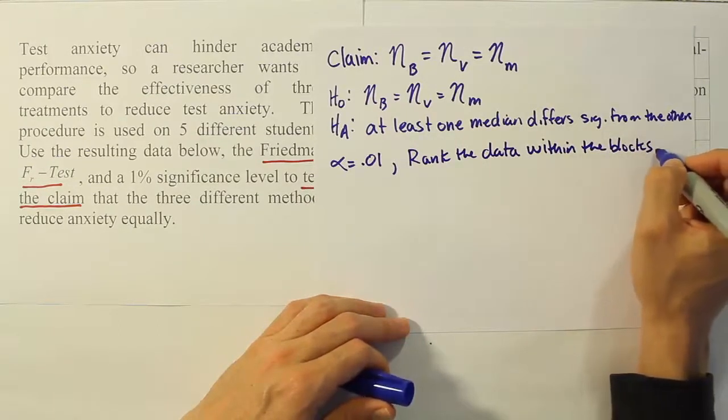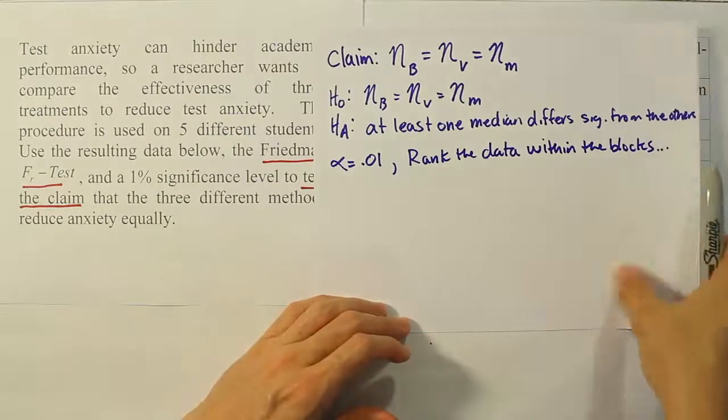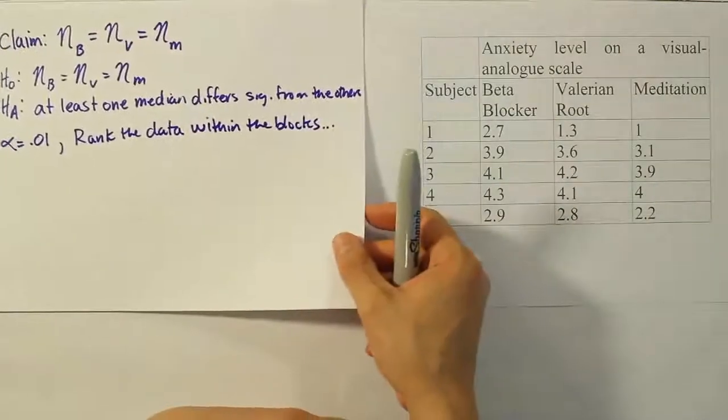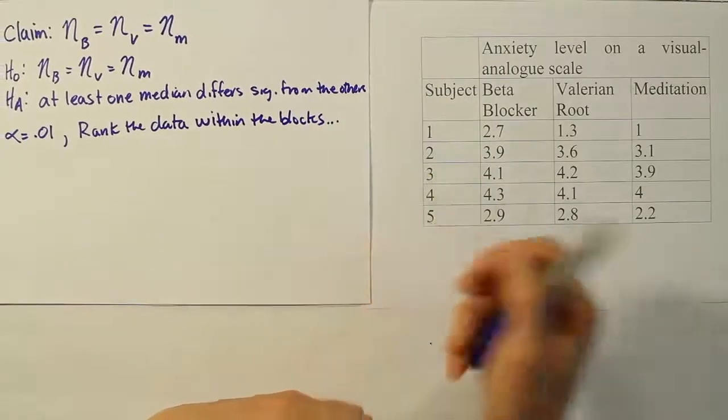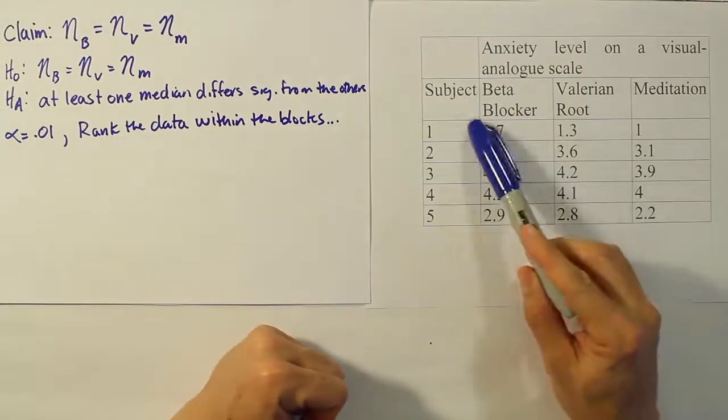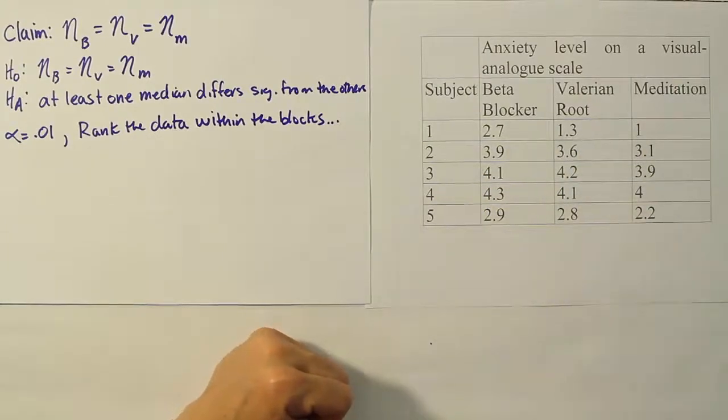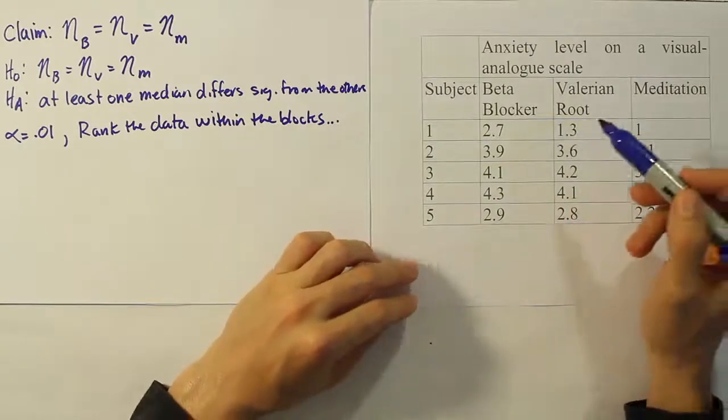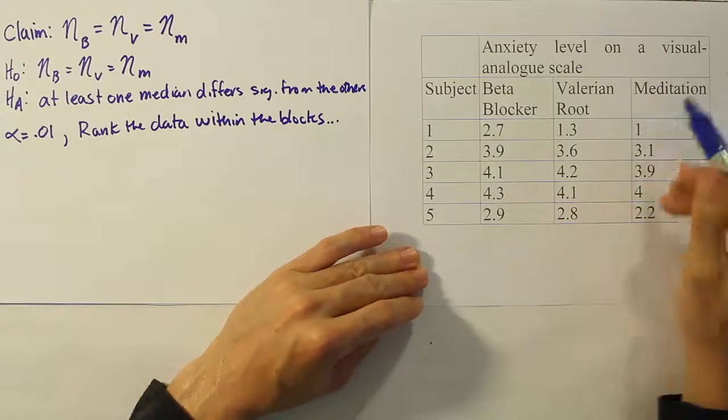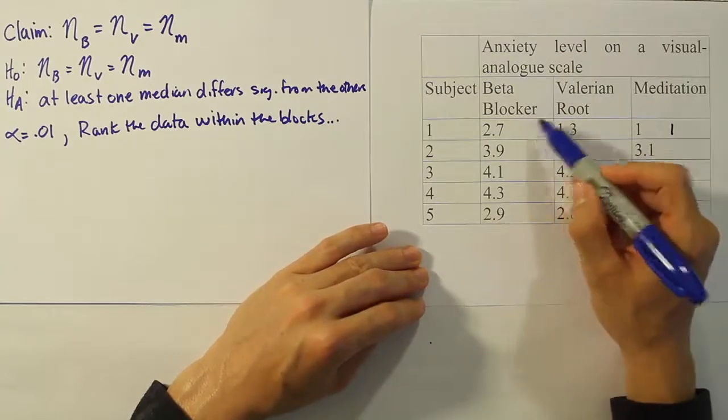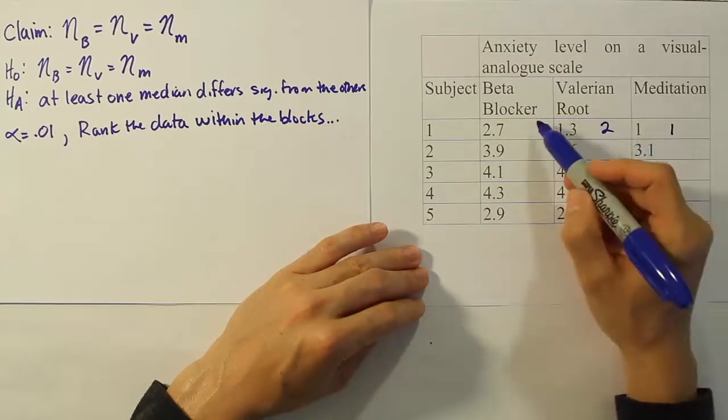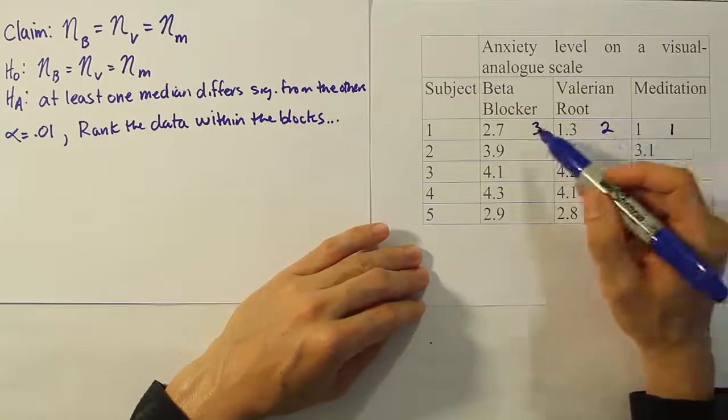When we look over here at our data, we see that the data itself has five blocks, and those are the subjects that are involved in the study. And then we have the three different treatments. So we have five blocks that we're going to have to rank the data inside of. Let's go ahead and do the ranking now. What we're going to do is we're just going to go right across in the block and rank them one, two, or three based on their size. So I'll rank this one one, this one will get the rank two, and this one gets the rank three.